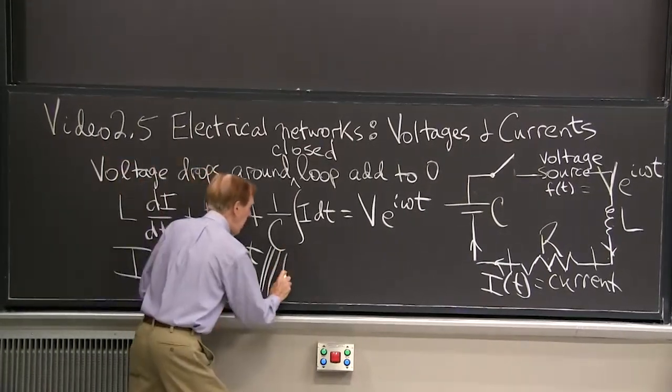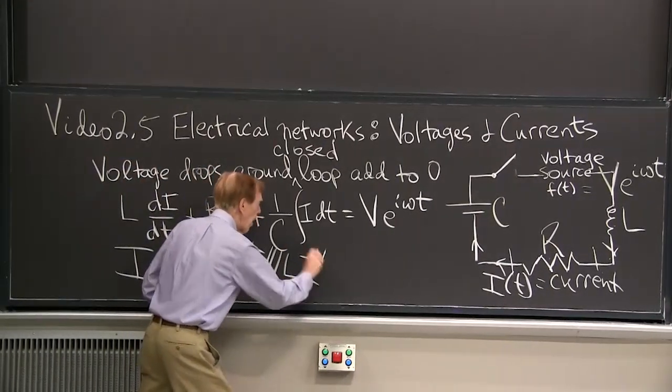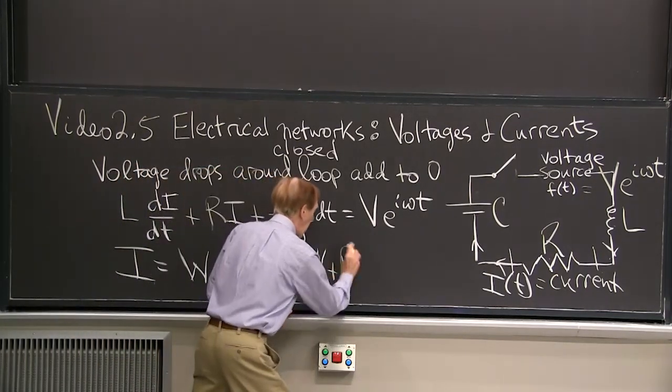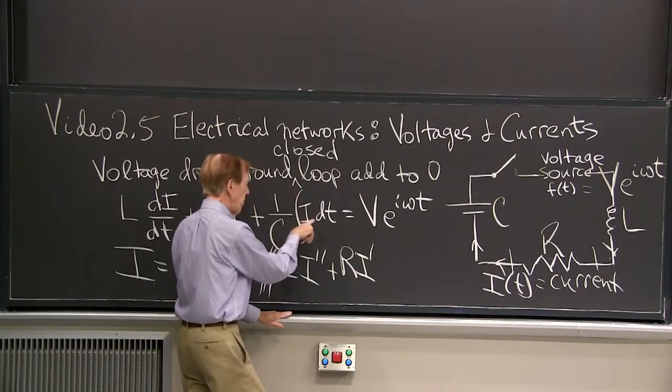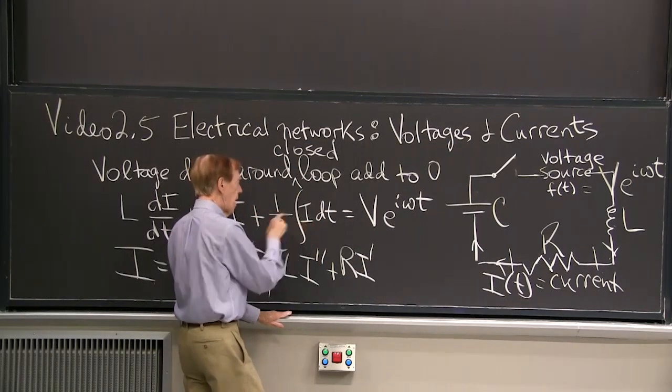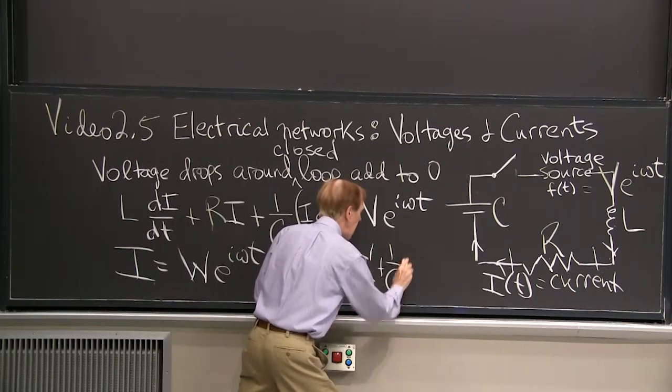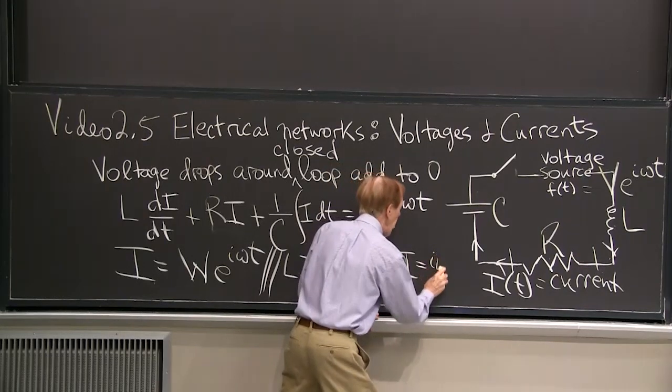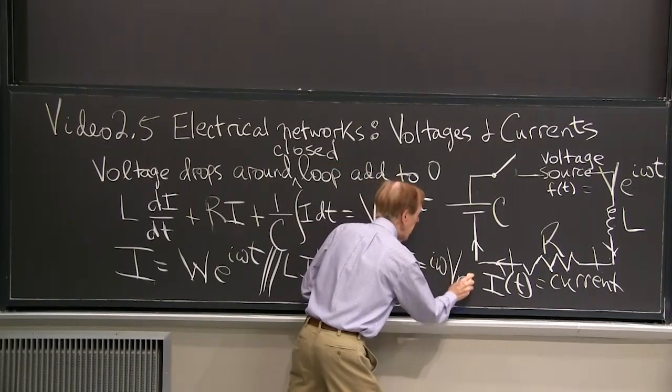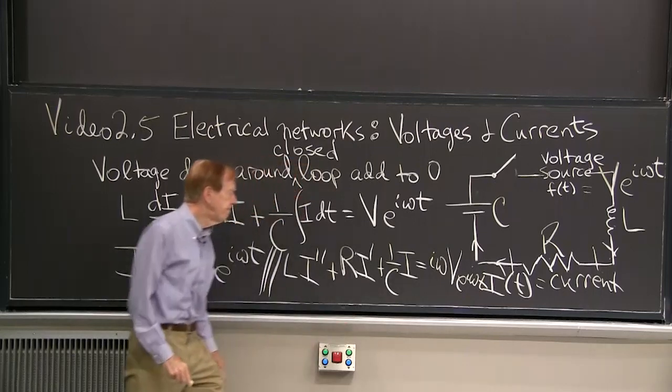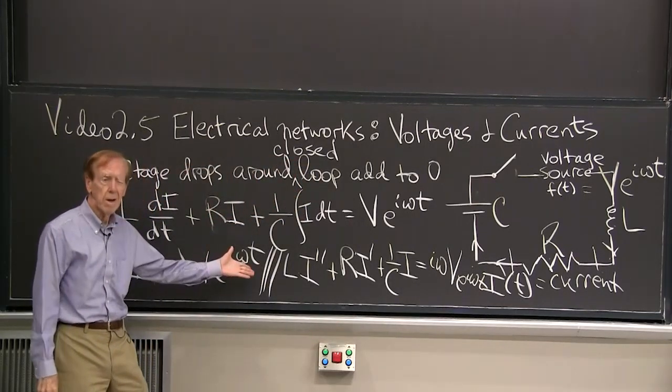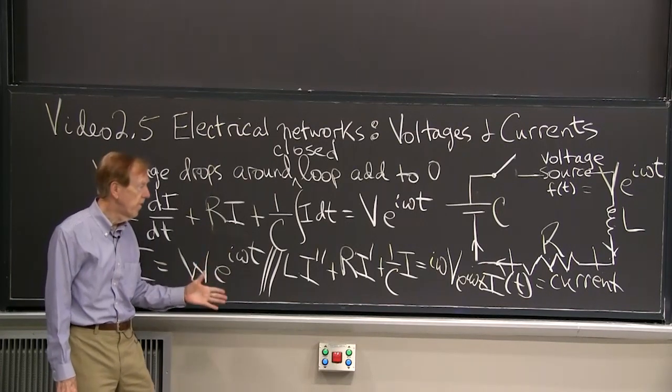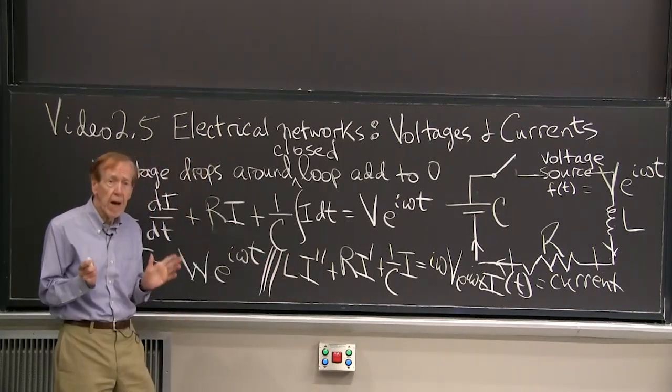That would be L times i double prime. Taking the derivative of the derivative. This would be R i prime. The derivative of the integral would be just i itself. So I'd have 1 over C i. And I would have the derivative here, iωV e to the iωt. So it's just a standard, second order, constant coefficient, linear differential equation.